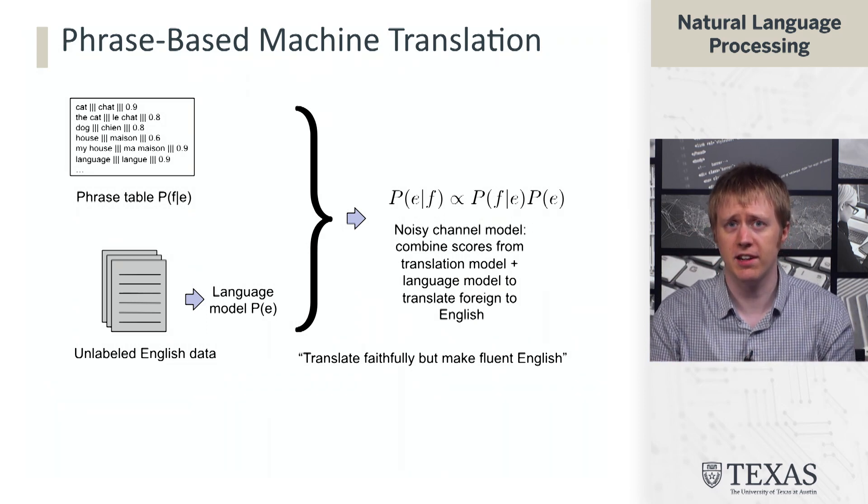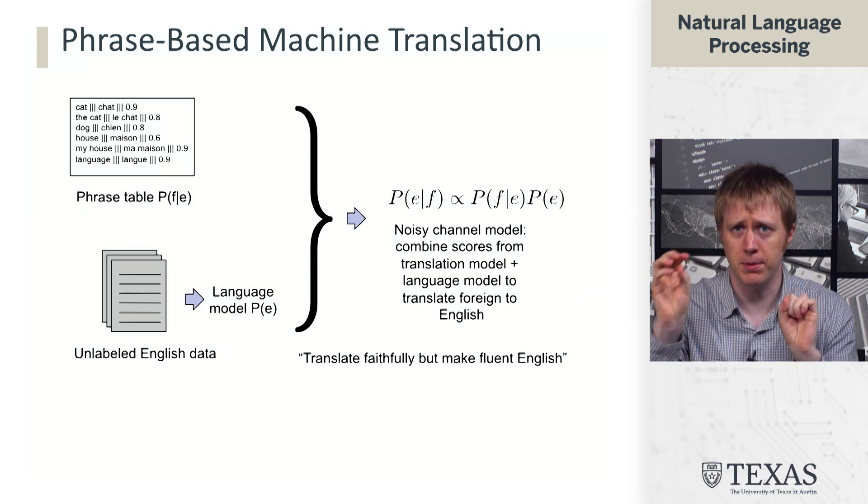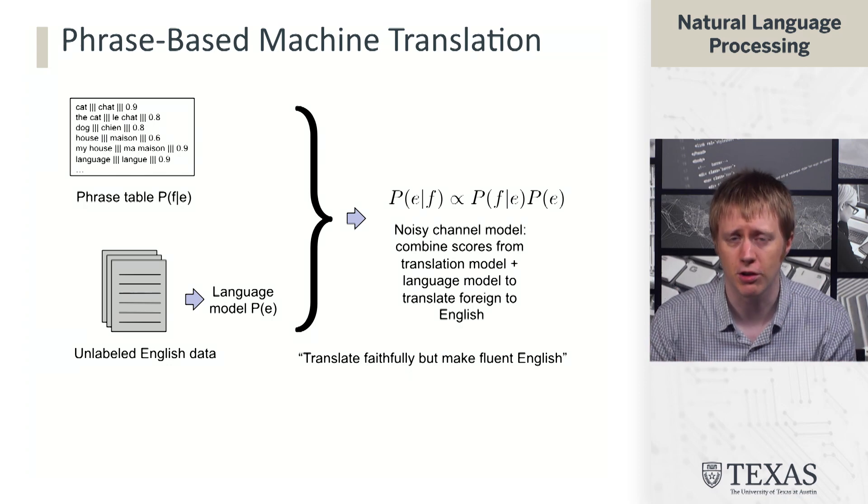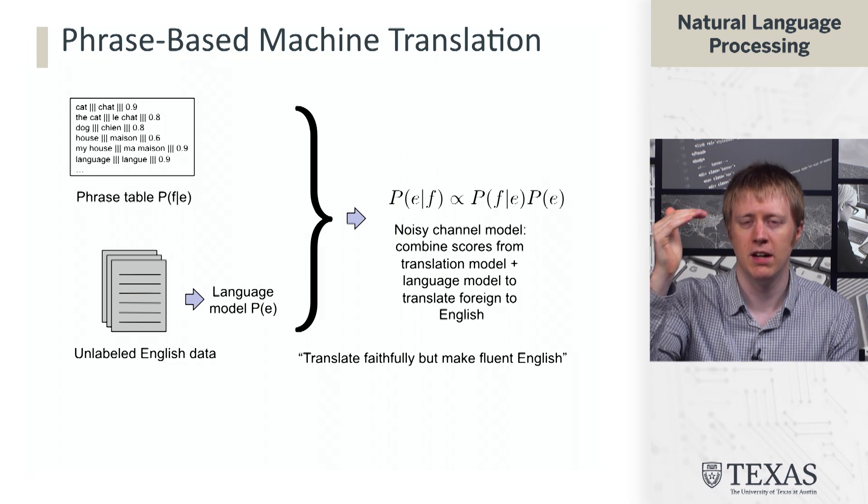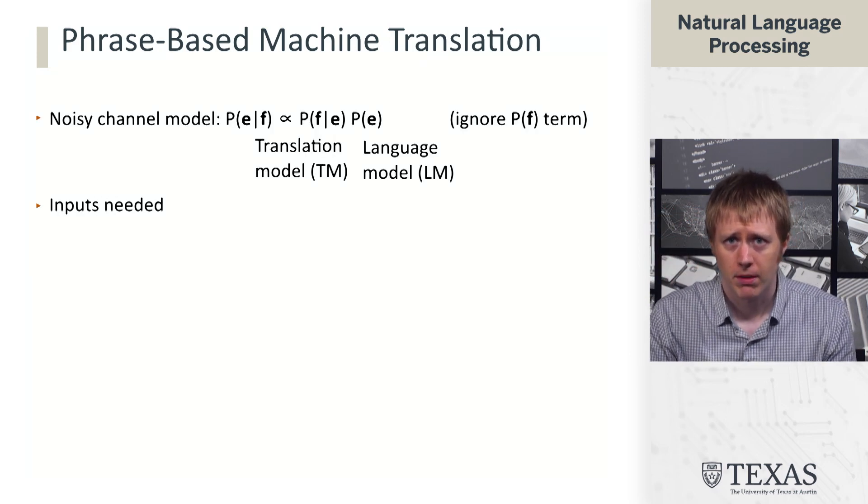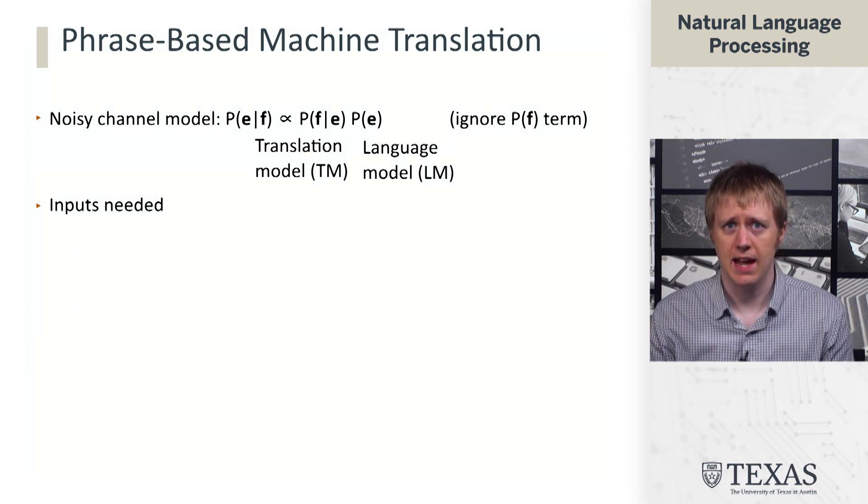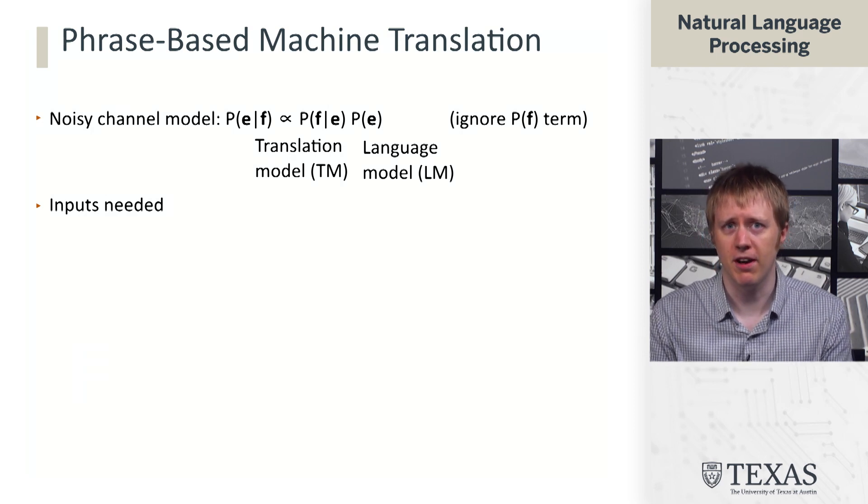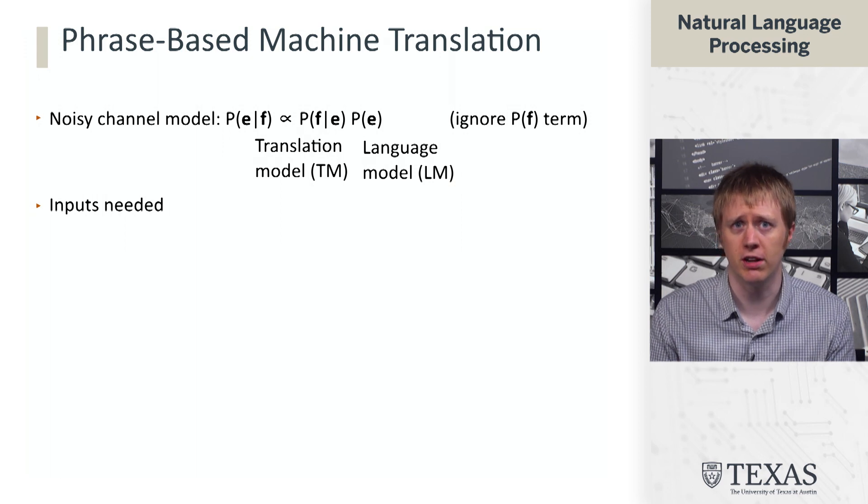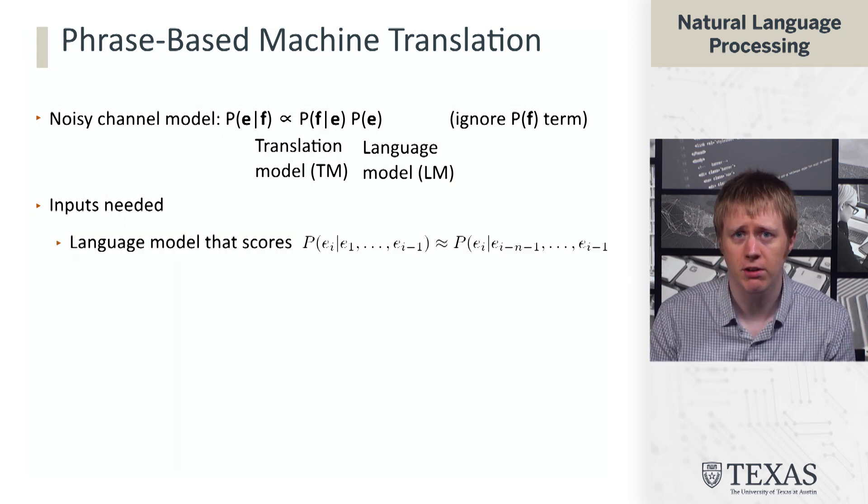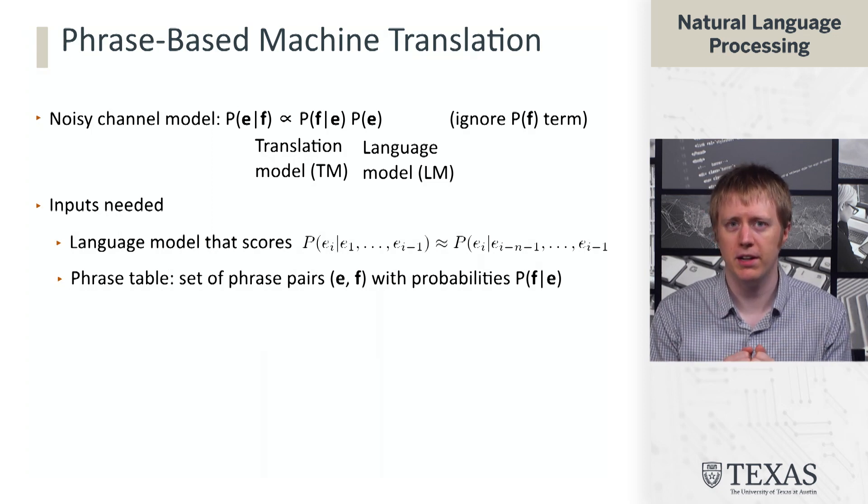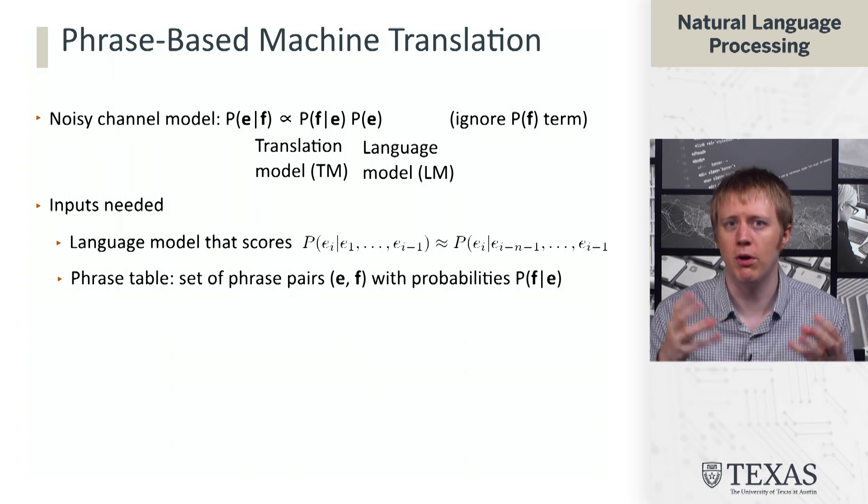And what this is going to allow us to do is it's going to allow us to incorporate two constraints here. The first is from P of E, which is that this has to have high probability under a language model. And the second is from P of F given E, which is that these things have to basically associate with each other. We have to be able to translate, reproduce the original French sentence given the English sentence. So that's the idea behind this noisy channel approach to MT, and we have these two pieces called the translation model and the language model. We need a language model. We're going to use an n-gram model for this. And we need a phrase table, which we talked about how to get.